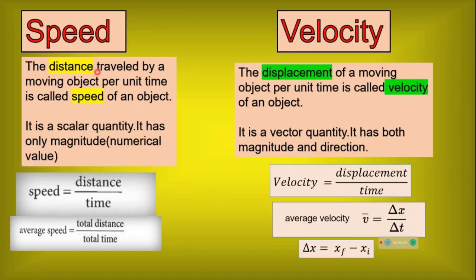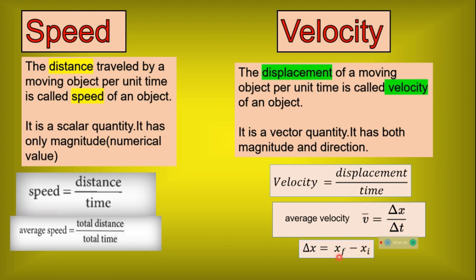Speed: the distance travelled by a moving object per unit time is called speed. Velocity: the displacement of a moving object per unit time is called velocity. Speed is a scalar quantity — it has only magnitude. Velocity is a vector quantity — it has both magnitude and direction. Speed is equal to distance divided by time. Average speed is total distance divided by total time. Velocity is displacement divided by time. Average velocity V-bar equals delta x divided by delta t, where delta x equals final position minus initial position (xf minus xi), and delta t is the time taken.